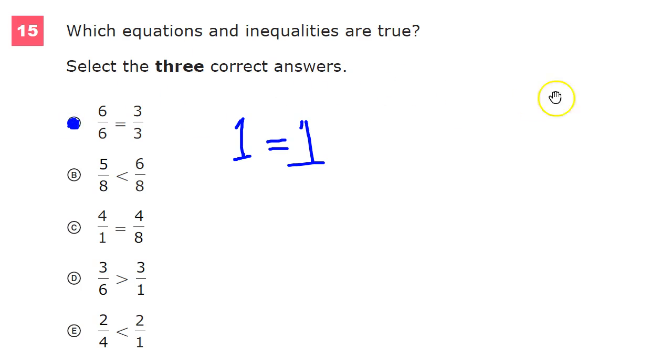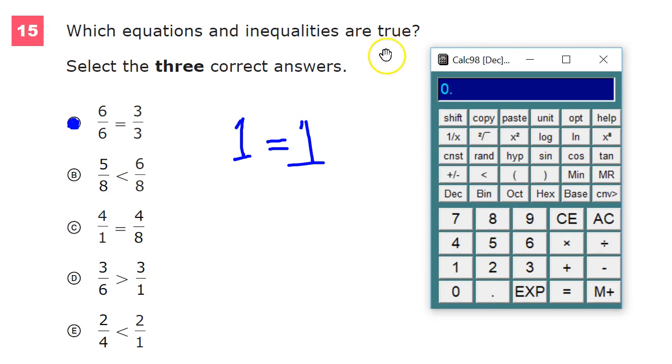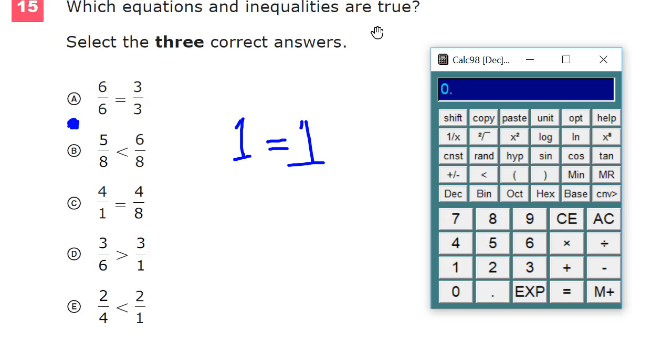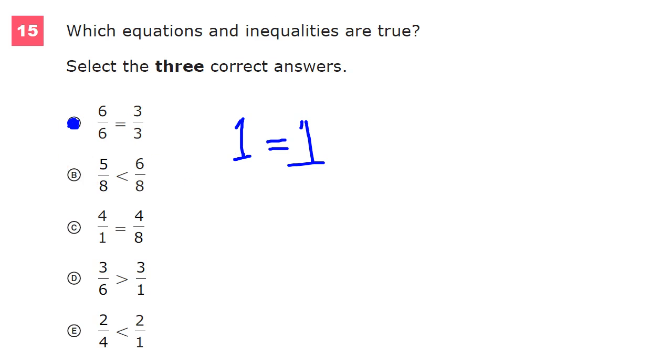But what if you're all, I don't trust you. Okay, well, this is a calculator allowed section, it has a little symbol up here. See, there's the symbol, calculator allowed. It even tells you. Then you could just do six divided by six, you write that number down, and then three divided by three, and write that number down. They're the same number, so it works.